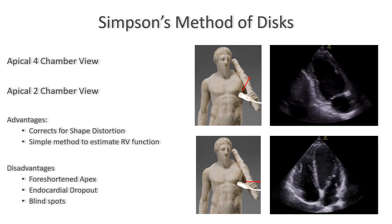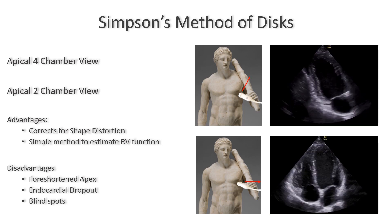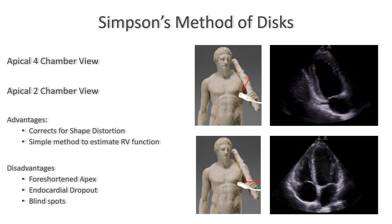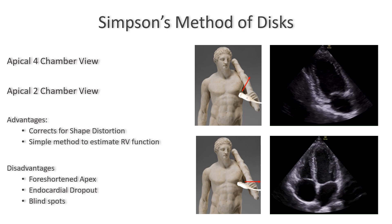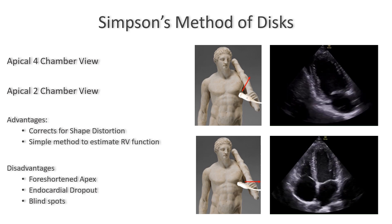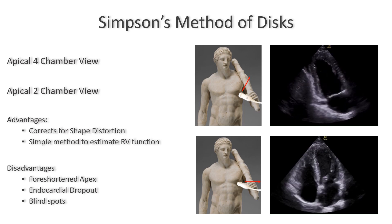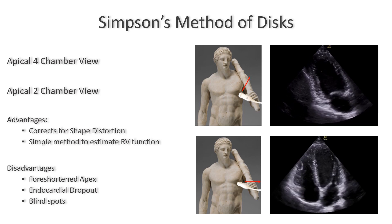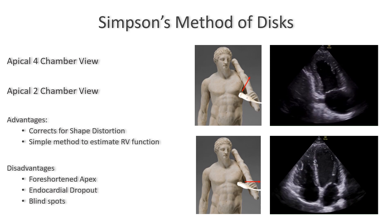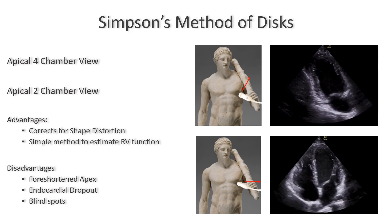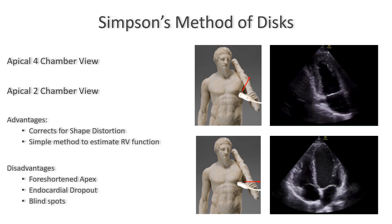The biggest limitation of the biplane technique is the occasional inability to visualize the endocardial border. Sometimes the apex can be foreshortened, so you cannot see exactly where the left ventricular cavity ends. Other times you may have endocardial dropout, meaning the blood-tissue interface is not well visualized, and depending on the quality of your image, you may not be able to trace the left ventricle very well. If that is the case, cardiologists may choose to use echo contrast to delineate the endocardial border better.